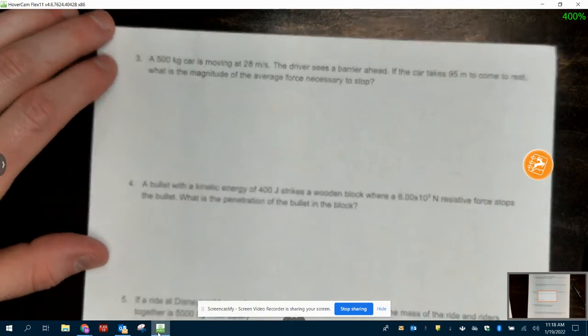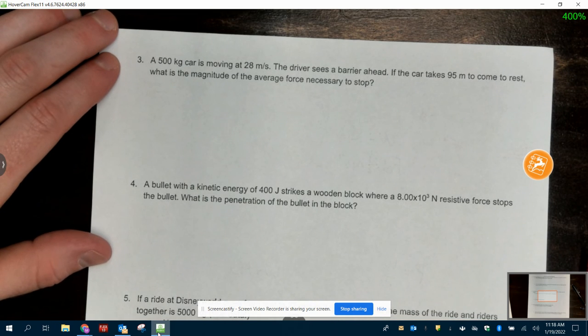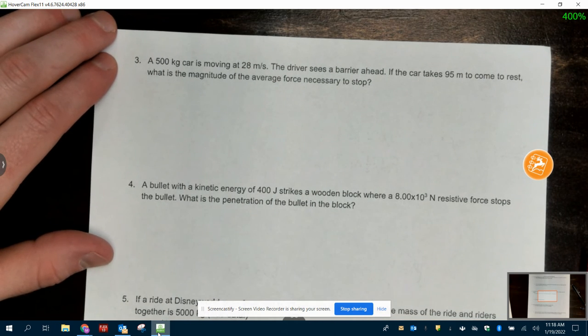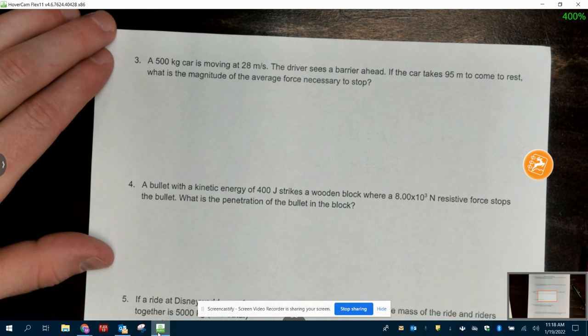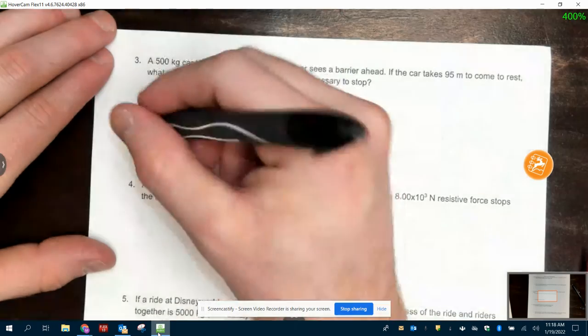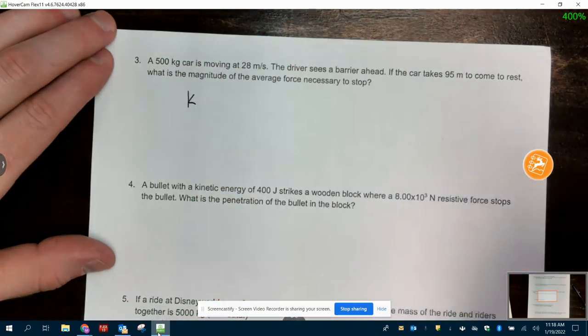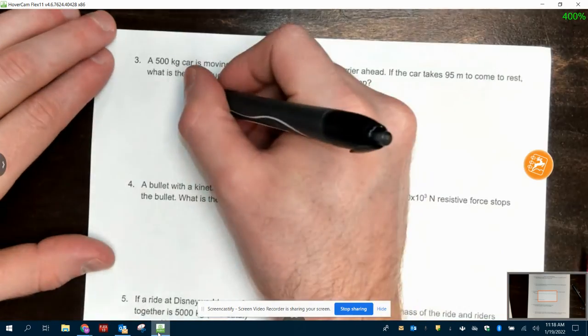Three. A 500-kilogram car is moving at 28 meters per second. The driver sees a barrier ahead. If the car takes 95 meters to come to rest, what is the magnitude of the average force necessary to stop? So what are we starting with? Kinetic. And what's causing it to stop? Work.